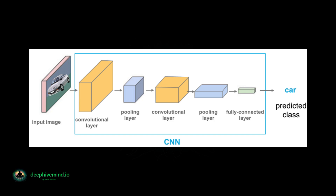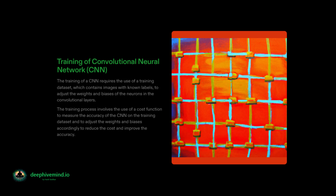Overall, the CNN works by analyzing the visual data in multiple layers, with each layer detecting and analyzing different features in the data. The final predictions of the network are based on the information gathered from all of the layers, making CNNs highly effective at recognizing patterns and features in visual data.